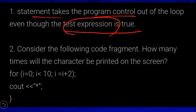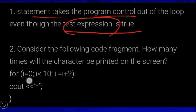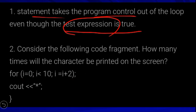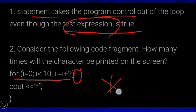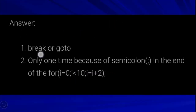Consider the following code fragment: how many times will the character star be printed on the screen? Looking at the for loop, i is initialized to 0 and i is less than 9. However, because of the semicolon at the end of the for loop statement, the body will not execute — zero times the star is printed.